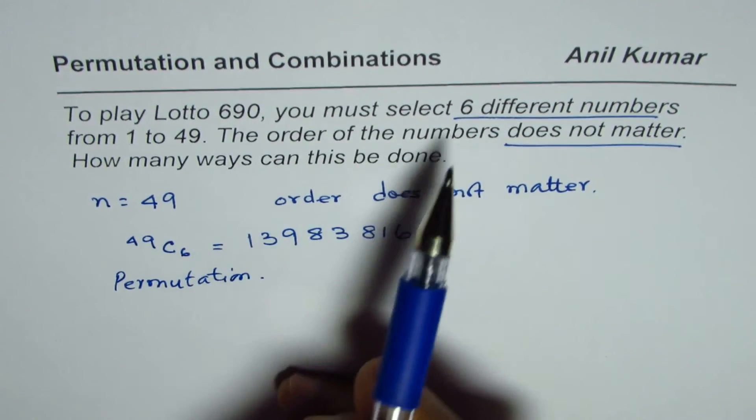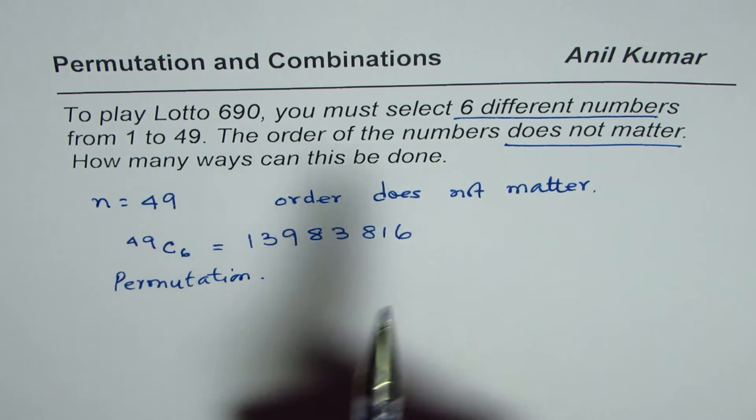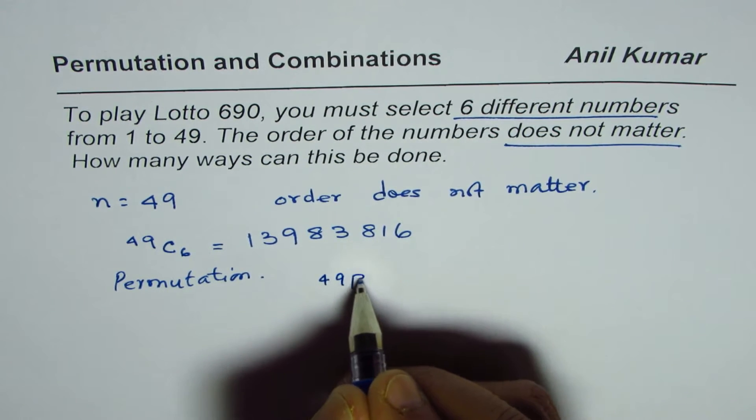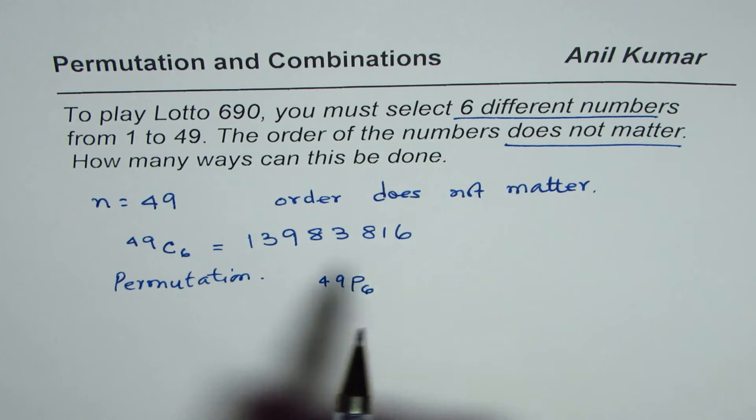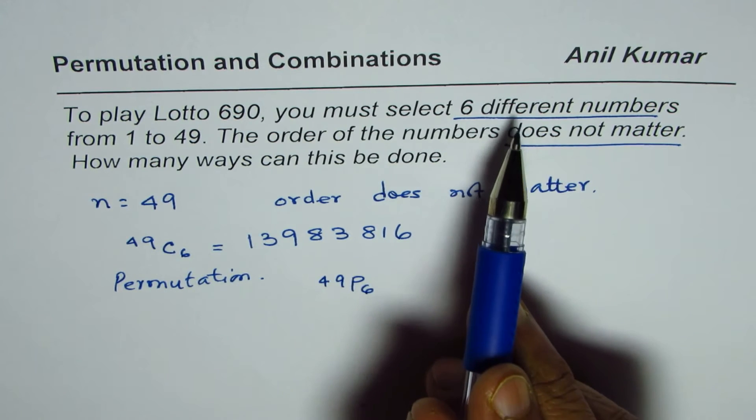Now, if you see, we have to select 6 different numbers from 49. So that gives you a selection of 49P6. Now, out of these 6 which you select, they can form a combination of 6 factorial.